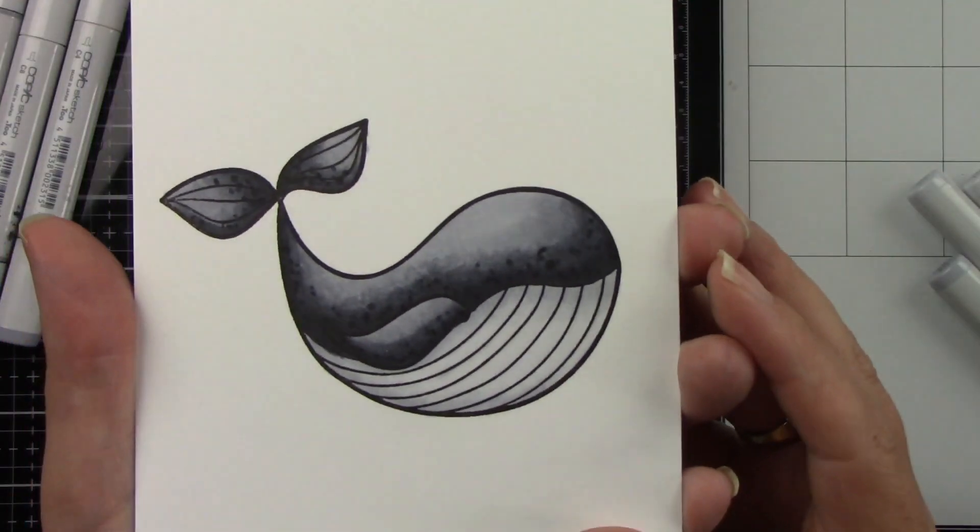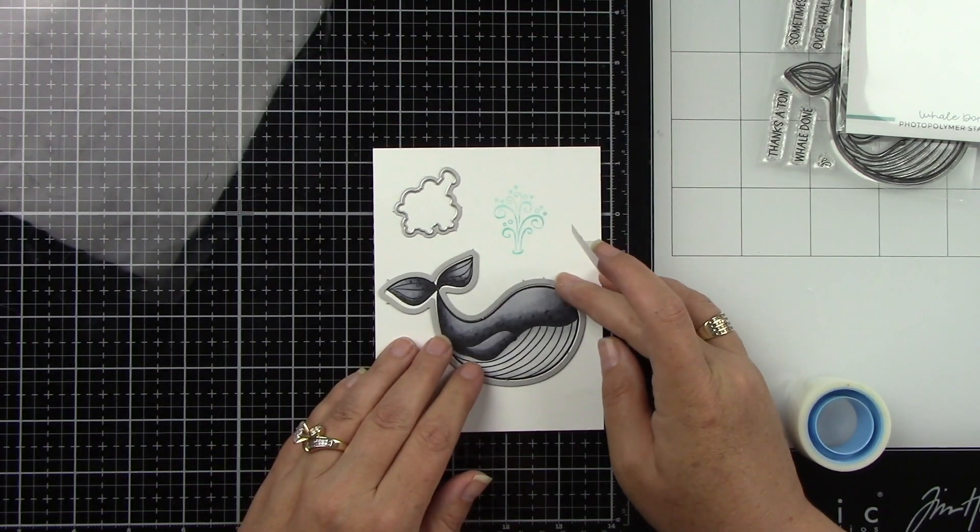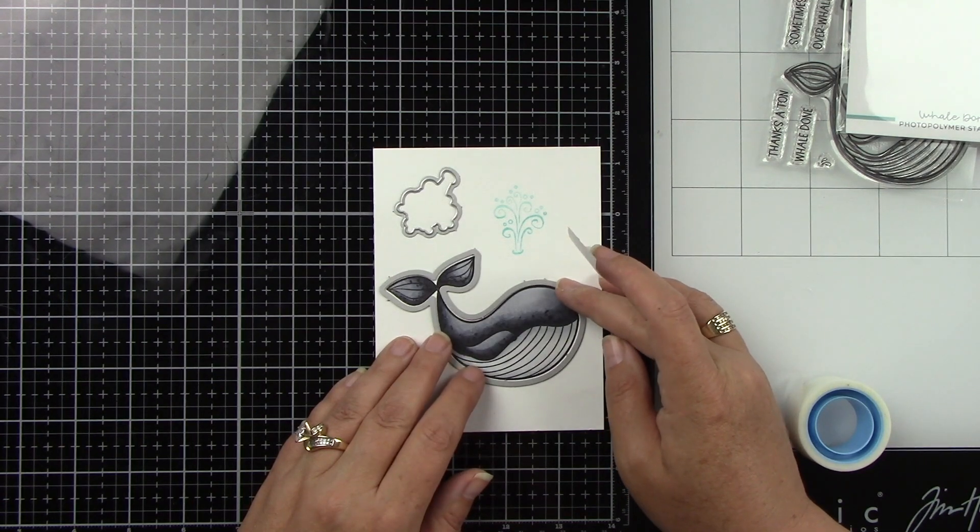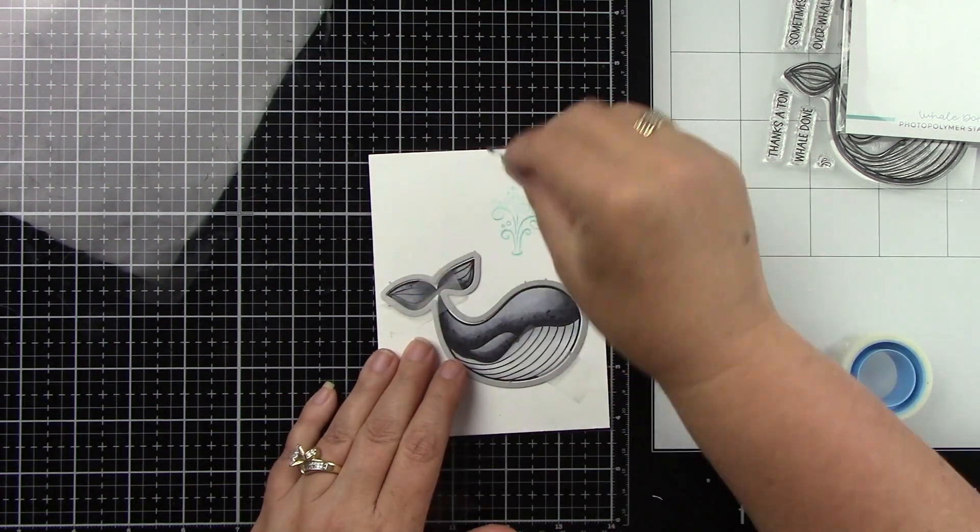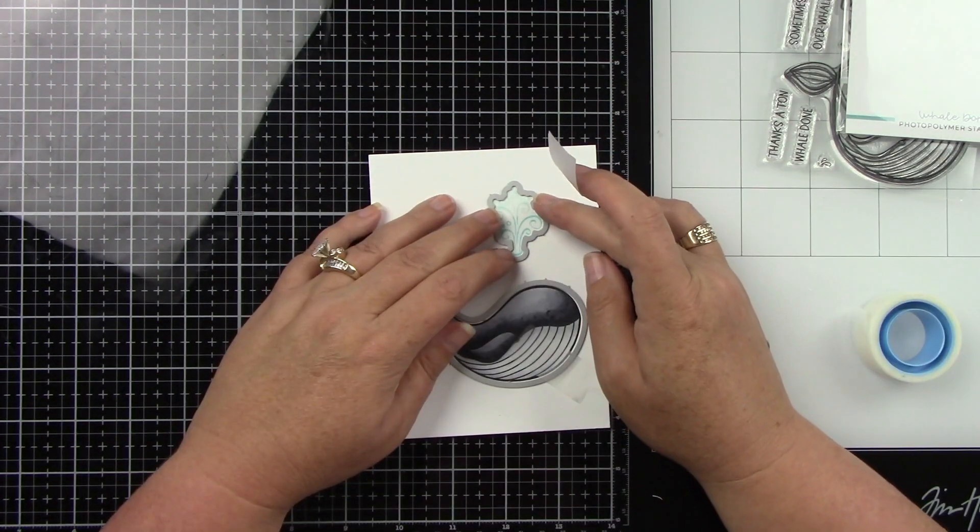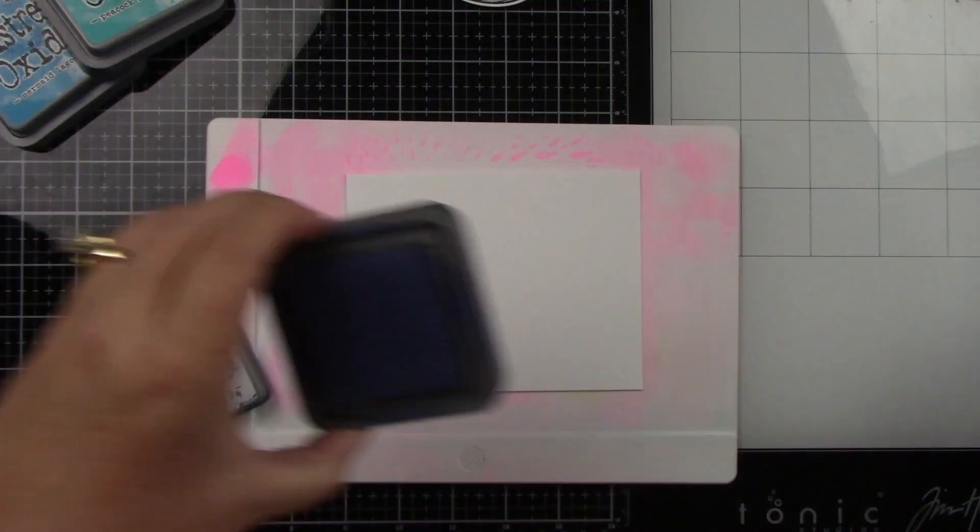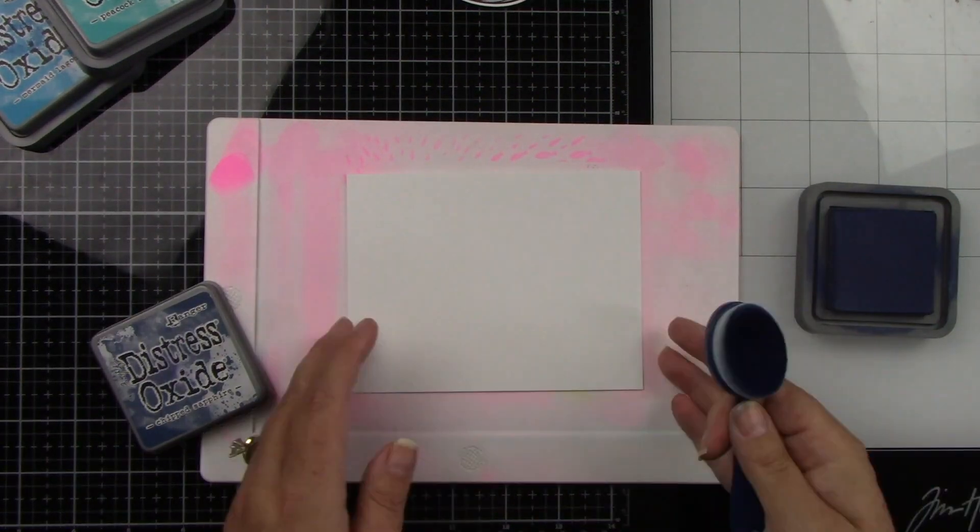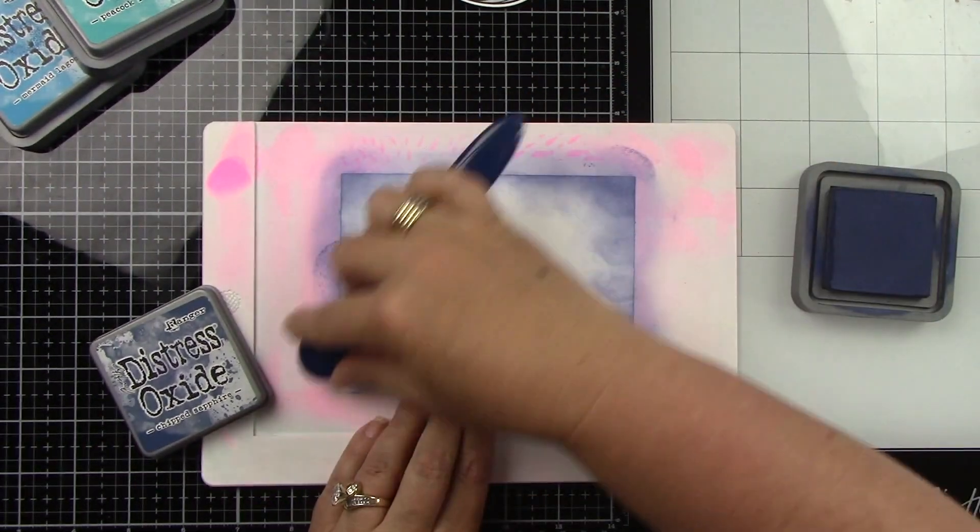You can see there how that just adds texture and just a lot more interest to the image itself. Isn't he cute? Okay, so let's use that coordinating die to die cut him out. I absolutely love coordinating dies. But there's that little spout there that I ended up not using because it kind of took up the background.